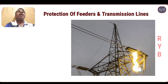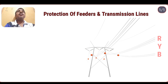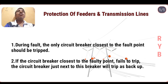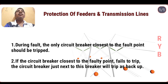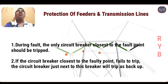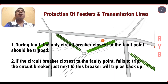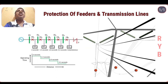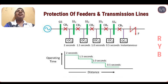Protection of lines should have some special features. During a fault, only the circuit breaker closest to the fault point should be tripped. If a far-away circuit breaker trips instead of the nearest one, different lines will be subjected to unnecessary interruptions. If the circuit breaker closest to the fault point fails to trip, the circuit breaker just next to it will trip as backup protection.